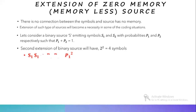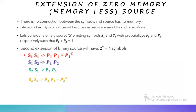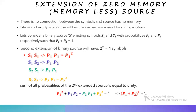The symbols and their probabilities are: s1s1 has probability p1 squared; s1s2 has probability p1p2; s2s1 has probability p2p1; and s2s2 has probability p2 squared. The sum of all probabilities of the second extended source equals unity: p1 squared plus p1p2 plus p2p1 plus p2 squared equals 1, which can also be written as (p1 plus p2) whole squared equals 1.